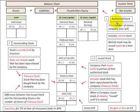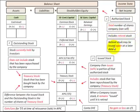Our authorized stock is the total number of shares that the company can sell. That includes any retired stock, and this retired stock may be issued again at a later date after it's retired.